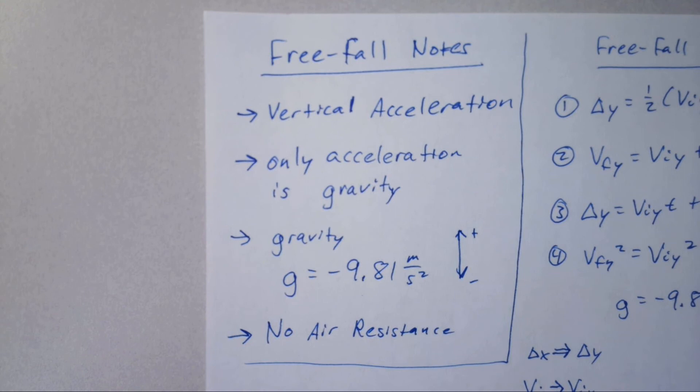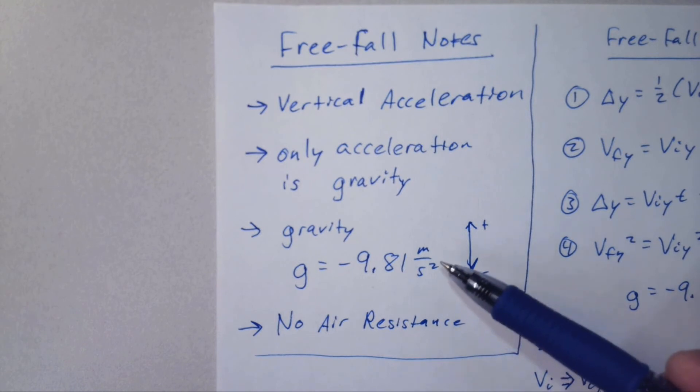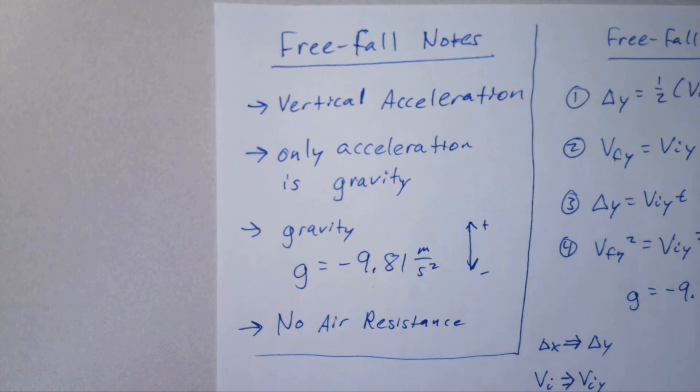Everything falls at the same exact rate. The only reason a rock and a leaf don't fall at the same rate is air resistance. To study how gravity works, we have to look at scenarios with no air resistance and constant acceleration. You can't use kinematic equations without constant acceleration. To use equations that don't involve calculus, we have to ignore air resistance.